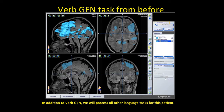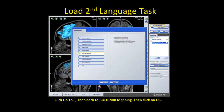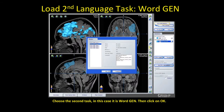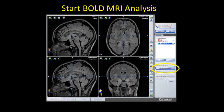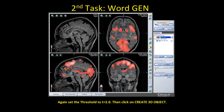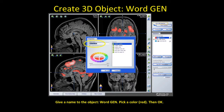Here's our verb generation task from before. In addition to verb generation, we'll process other language tasks for this patient. Click go to, then back to bold MRI mapping, click OK, and load our second language task — in this case word generation. Choose that task and hit OK. Define the parameters keeping them the same: starting at 4 seconds, blocks of 20 seconds on and 20 seconds off. Choose a different color — before it was blue, so now we'll choose red — then hit OK. Start bold analysis again. Here's our second task, word generation. Set the threshold to a liberal T value of 2.0, click create 3D object, name it word generation, pick red, and hit OK.